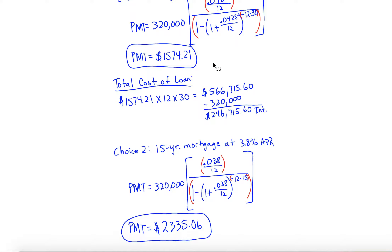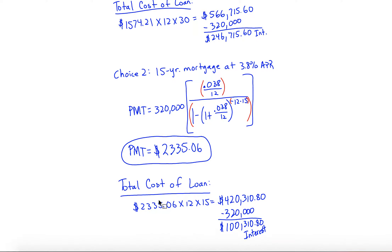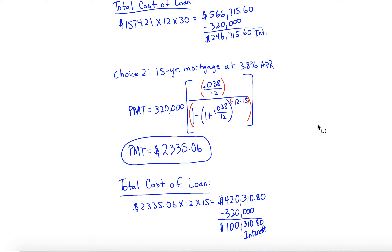Notice the payment is a lot more than what you were paying before. The total cost of this loan is $2,335.06 times 12 months times 15 years. Your loan was for $320,000, so you're actually only paying about $100,310.80 in interest. You paid a lot less in interest than on the 30-year loan. Some people say you could just make extra payments on a 30-year loan, but if you can swing the bigger monthly payment on a 15-year mortgage, it makes sense — and that's how loans work.